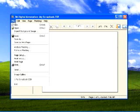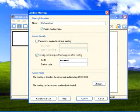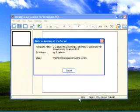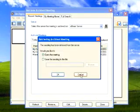One of our options is to archive a shared meeting. This allows us to archive a scrapbook meeting file. This meeting can later be reviewed, edited, shared or printed.